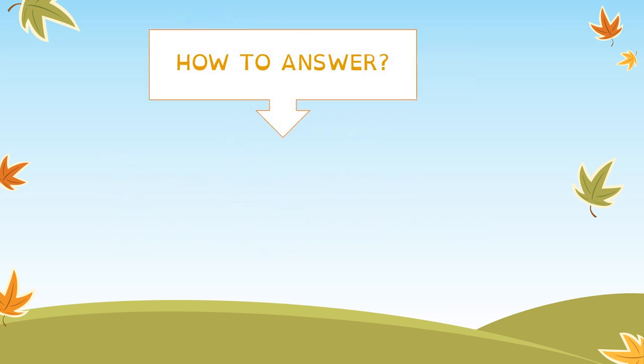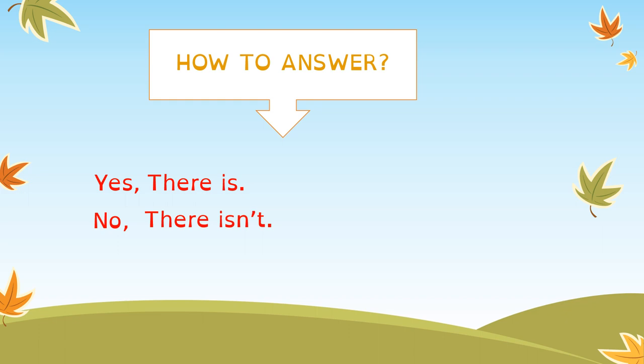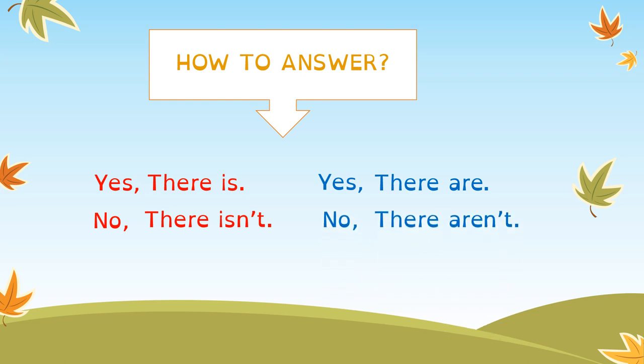Now we are going to answer these questions. When we are talking about singular — only one thing — the answer could be 'Yes, there is' or 'No, there isn't'. If it's plural, you say 'Yes, there are' or 'No, there aren't'. Repeat after me: 'Yes, there is. No, there isn't. Yes, there are. No, there aren't.' Very good! Let's practice.